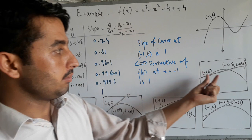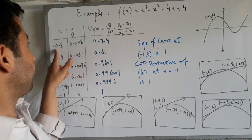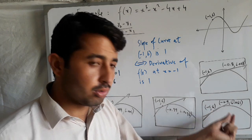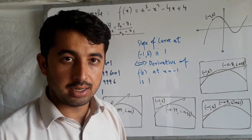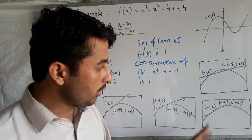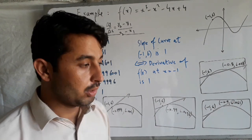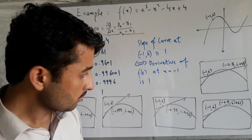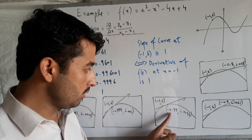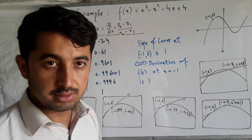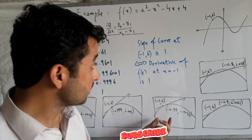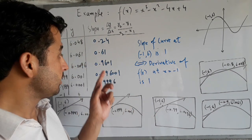Is formula ke tehat agar hum slope find karna chahte hain: (−0.8, 6.048) ka slope hoga 0.24. Isi tarah hum is doosre point (−0.9, 6.061) ko (−1, 6) ke kareeb late jayenge, phir ek line pass karenge aur uska slope find karenge — jo aayega 0.61. Usse bhi kareeb ek point lete hain: (−0.99, 6.0096) — is se bhi ek line pass karein to uska slope aayega 0.9601.